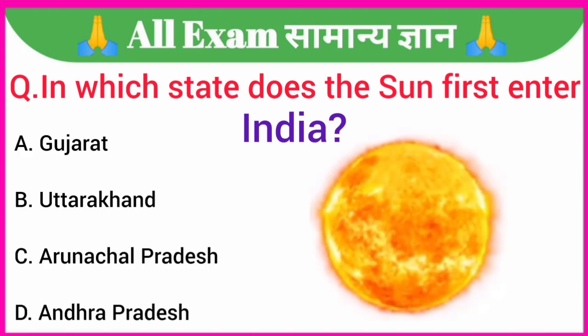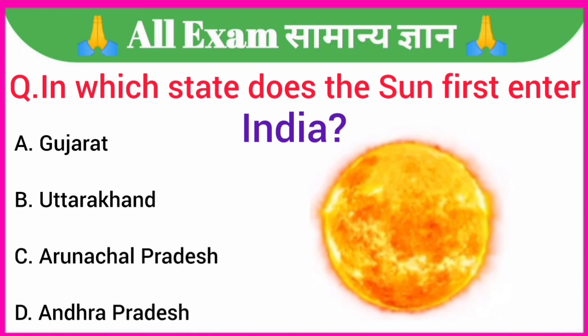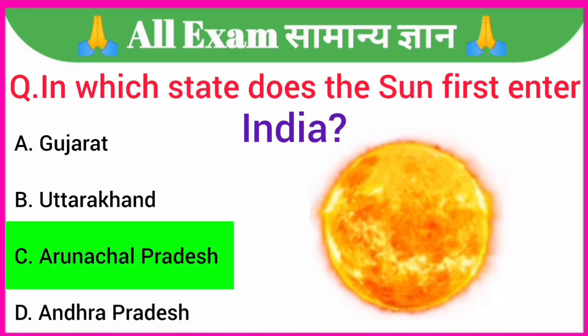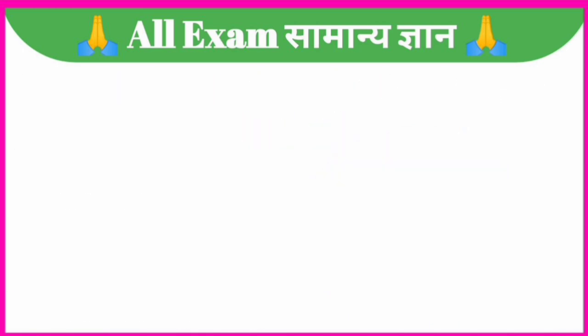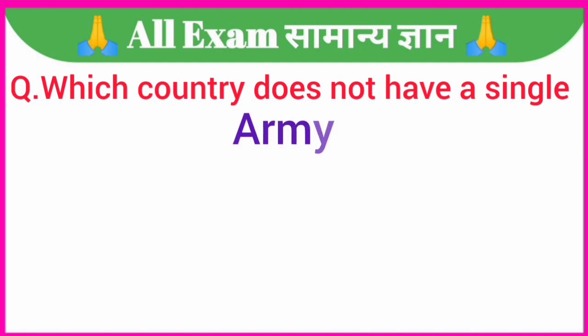In which state does the sun first enter India? A. Gujarat, B. Uttarakhand, C. Arunachal Pradesh, D. Andhra Pradesh. Your correct answer is option C. Arunachal Pradesh.